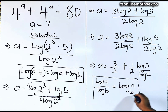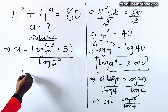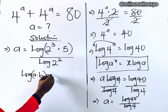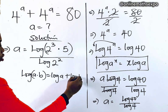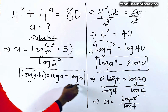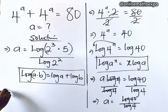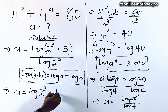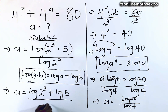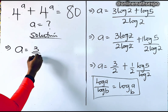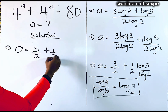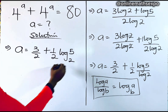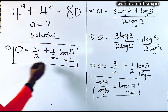Notice that for every log A divided by log B, it equals log of A base B. Also, for log of A times B, it is log A plus log B. Applying these rules, we have A equal to log of 2 to the power of 3, plus log of 5, all divided by log of 2 squared. So keeping it simplified, A is equal to 3 over 2 plus one-half log 5 base 2. And this is the value of A simplified.